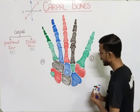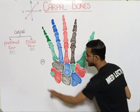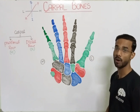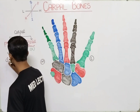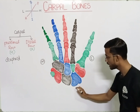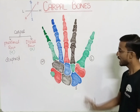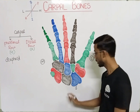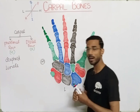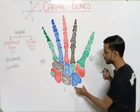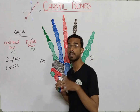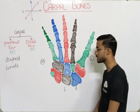Now we will discuss the proximal row from the lateral to the medial side. The first and most important bone is the scaphoid bone, present at the lateral side. Next is the lunate bone. Scaphoid means 'boat-like' — it is a boat-shaped bone present at the lateral side. Lunate is similar to a half moon or crescent shape.